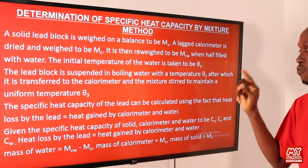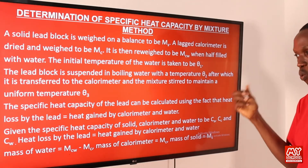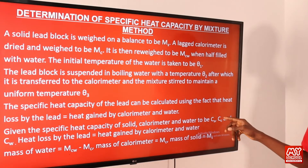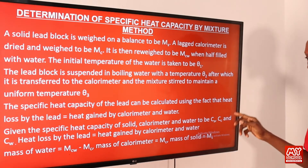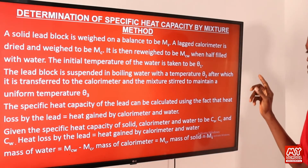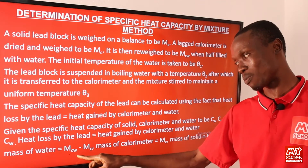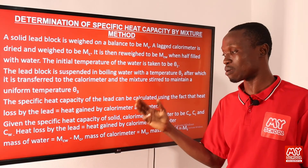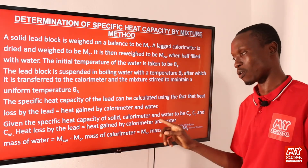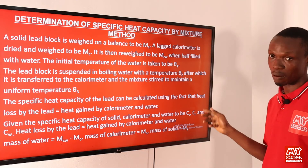The specific heat capacity of lead is calculated using the principle that heat lost by the lead equals heat gained by the calorimeter and water. Given the specific heat capacity of the solid as c_x, of the calorimeter as c_c, and of water as c_w, the mass of water is m_cw minus m_c — subtracting the mass of the calorimeter from the mass of the calorimeter-plus-water.